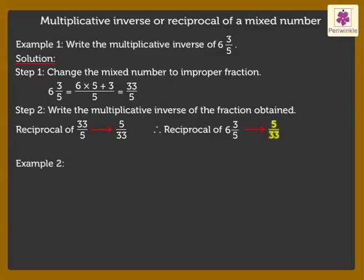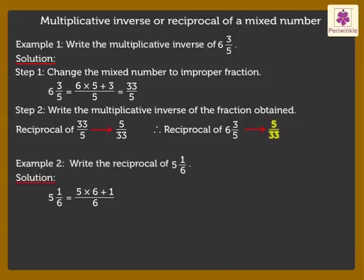Let us solve one more example of this type. On changing the Mixed Number to an Improper Fraction, we obtain 31 upon 6.